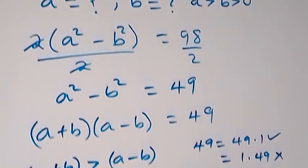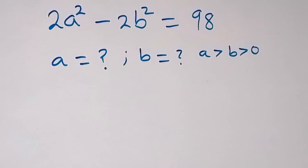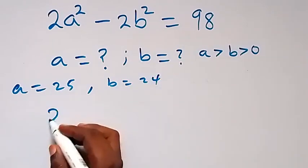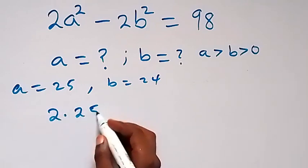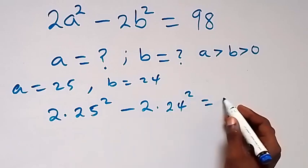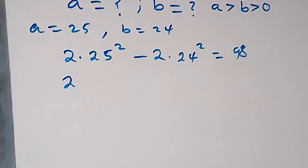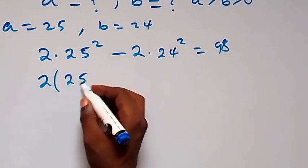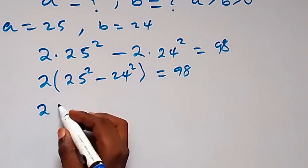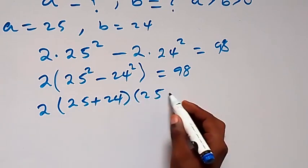To check, we substitute a = 25 and b = 24 into the original equation: 2 times 25² minus 2 times 24² equals 98. Factoring out 2 gives 2 times (25² minus 24²) = 98, and applying difference of two squares: 2 times (25 + 24)(25 minus 24) = 98.